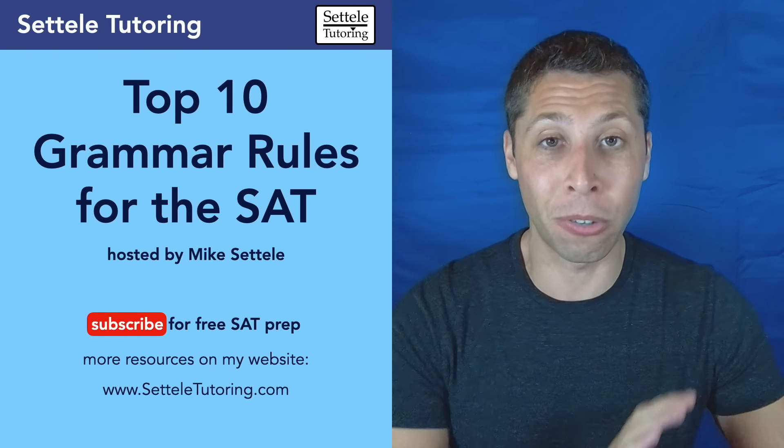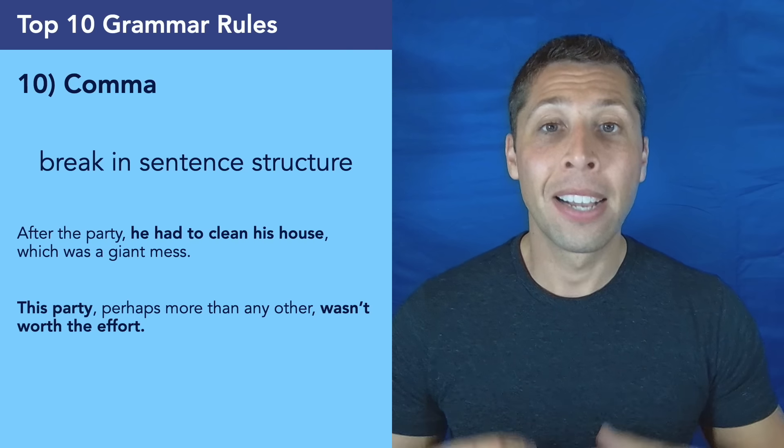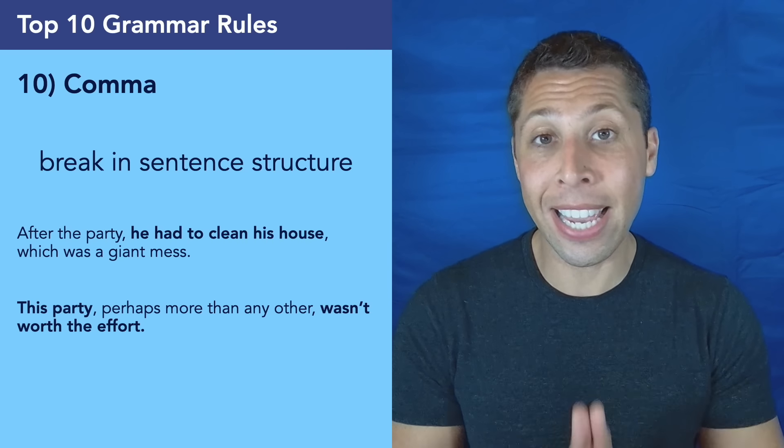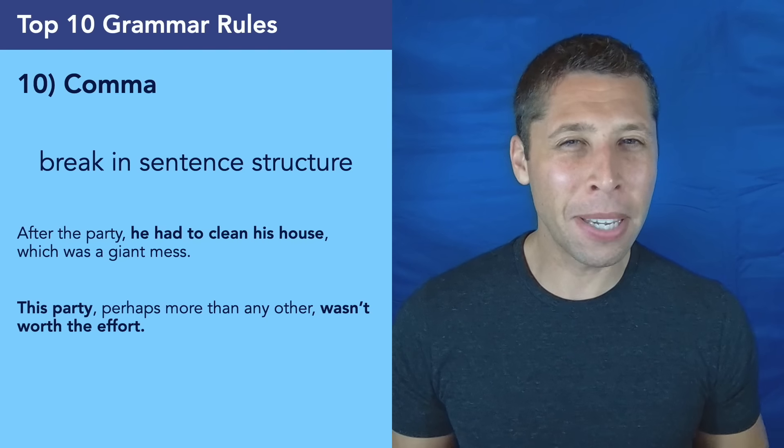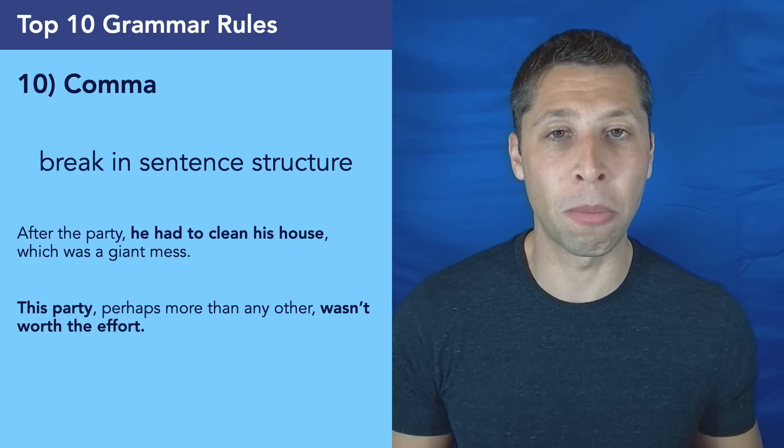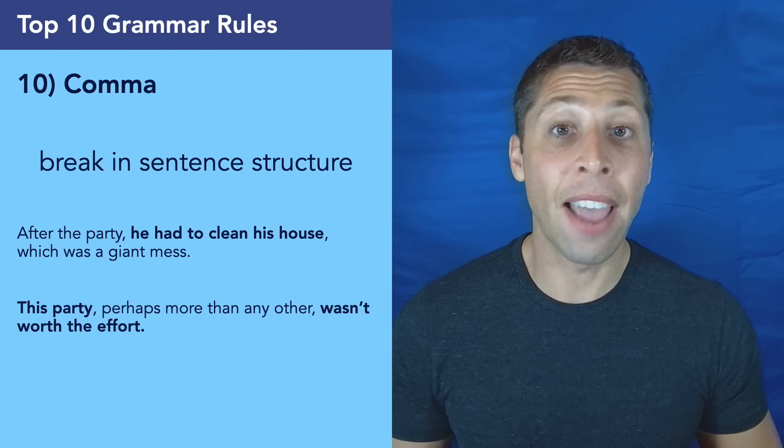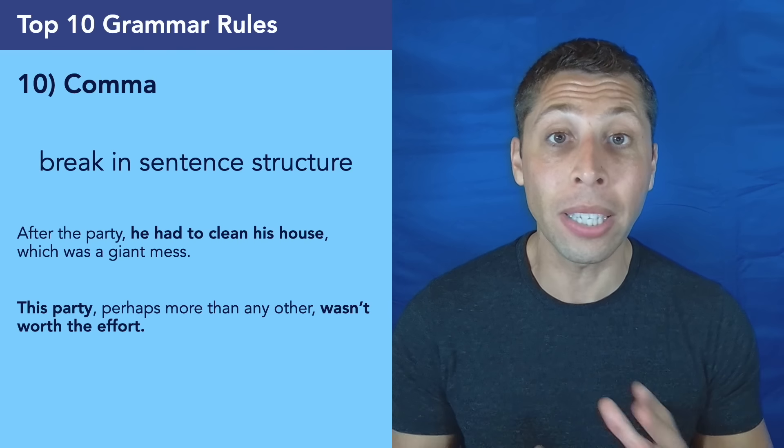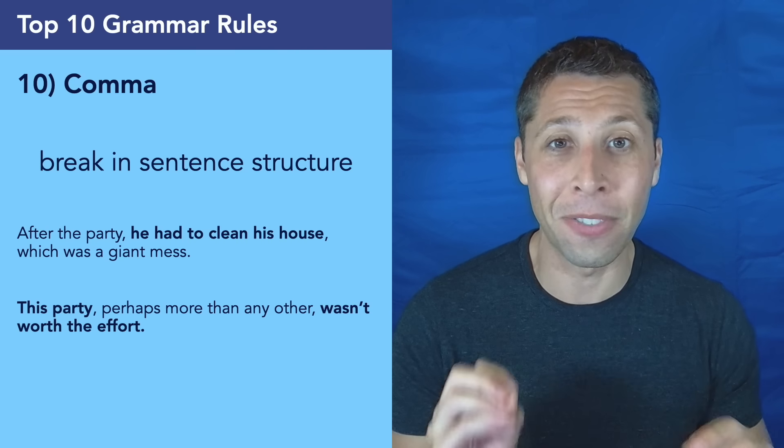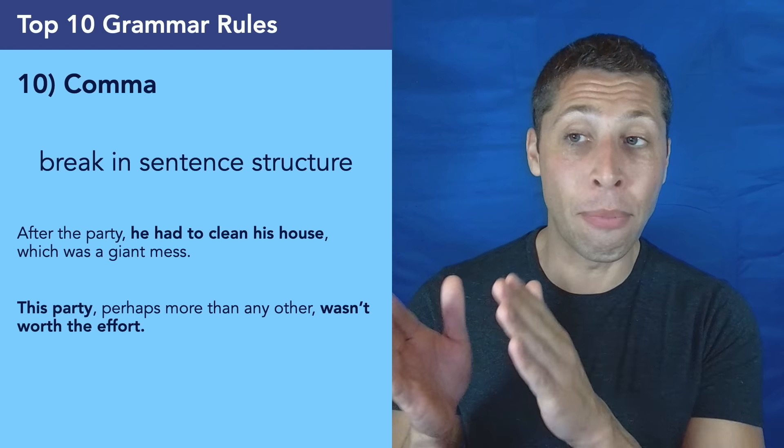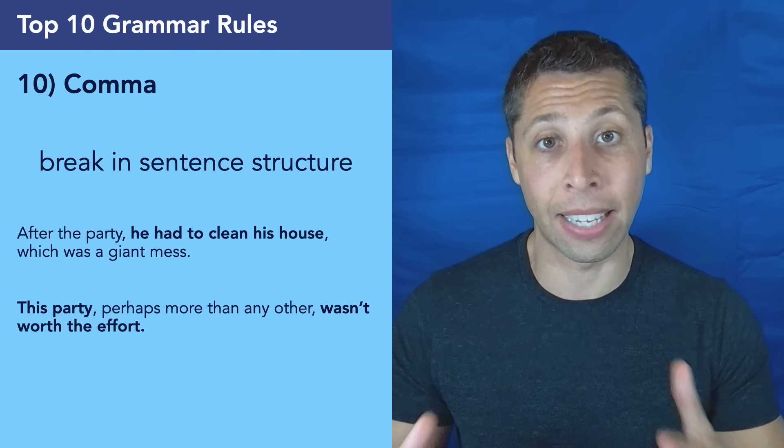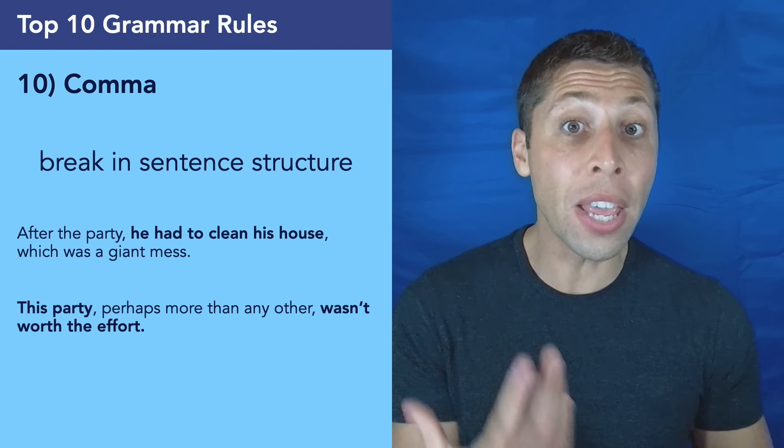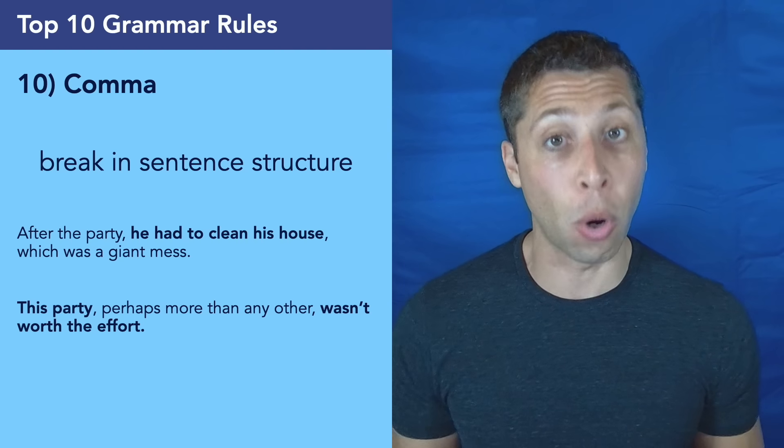The 10th most important grammar rule has to do with commas. Commas indicate a break in the sentence structure. Now the comma is probably the most important punctuation mark, and yet it's 10th on this list, and the reason is that commas have lots of rules that are very hard to memorize. And so it's not really a good idea to memorize each individual comma rule. Instead, if we just memorize that they show a break in the sentence structure, then whenever we're told to think about commas in the answer choices, we can just try to think about the overall structure of the sentence.